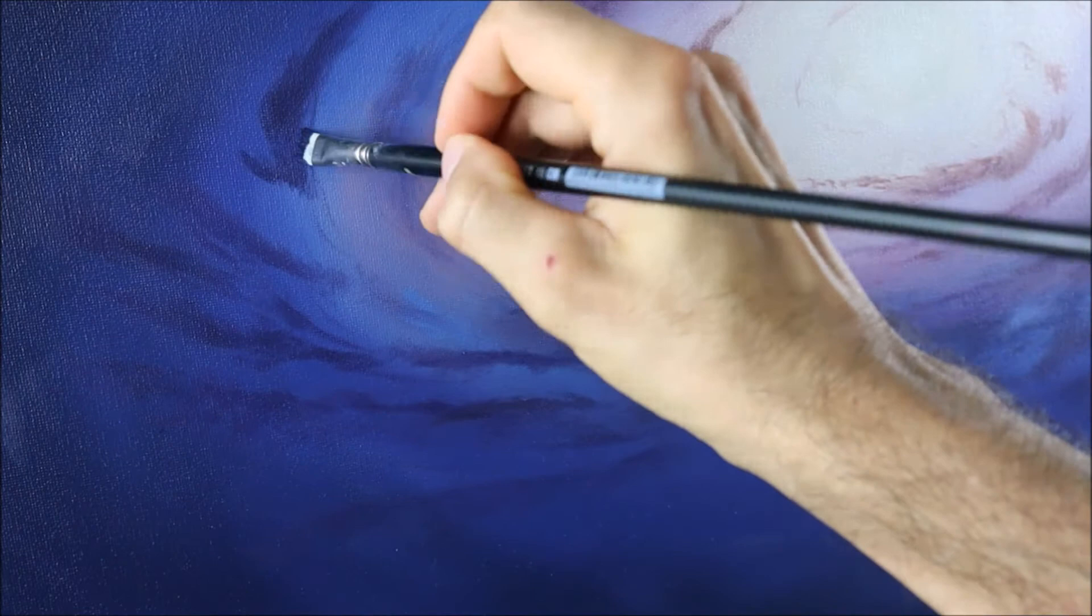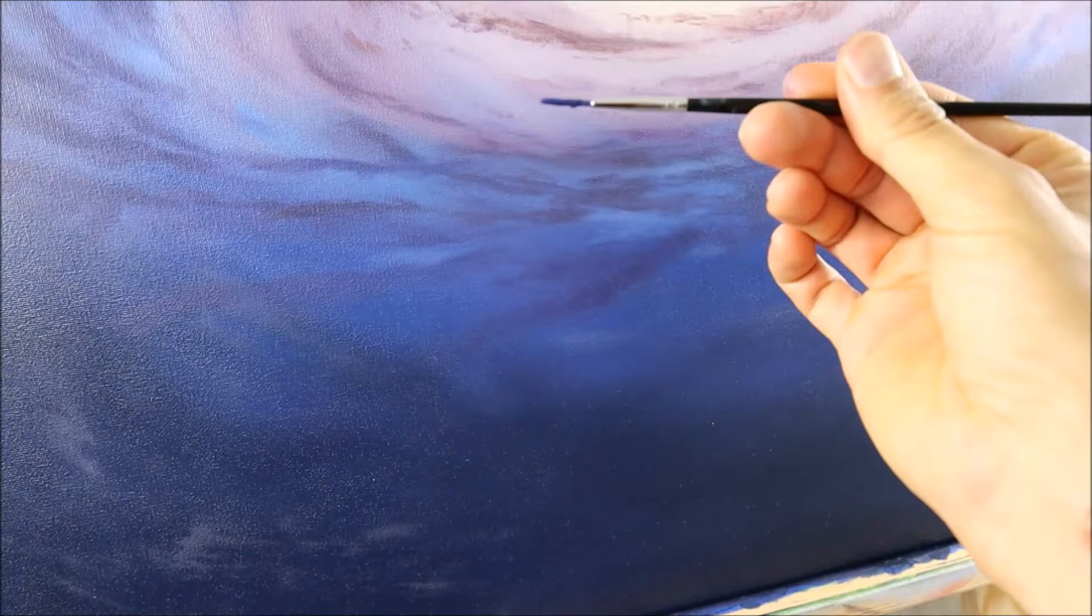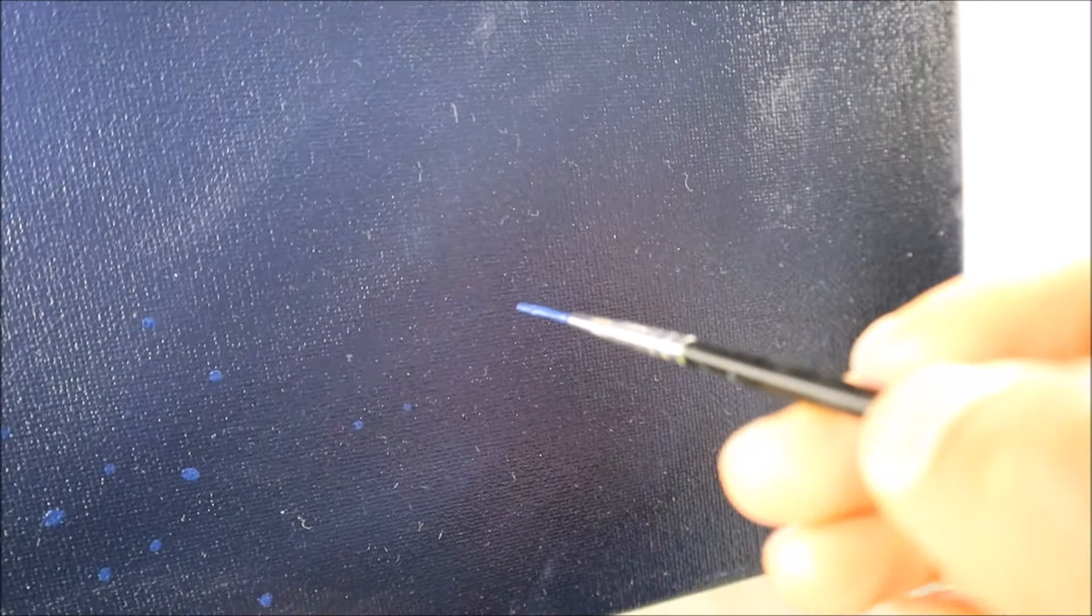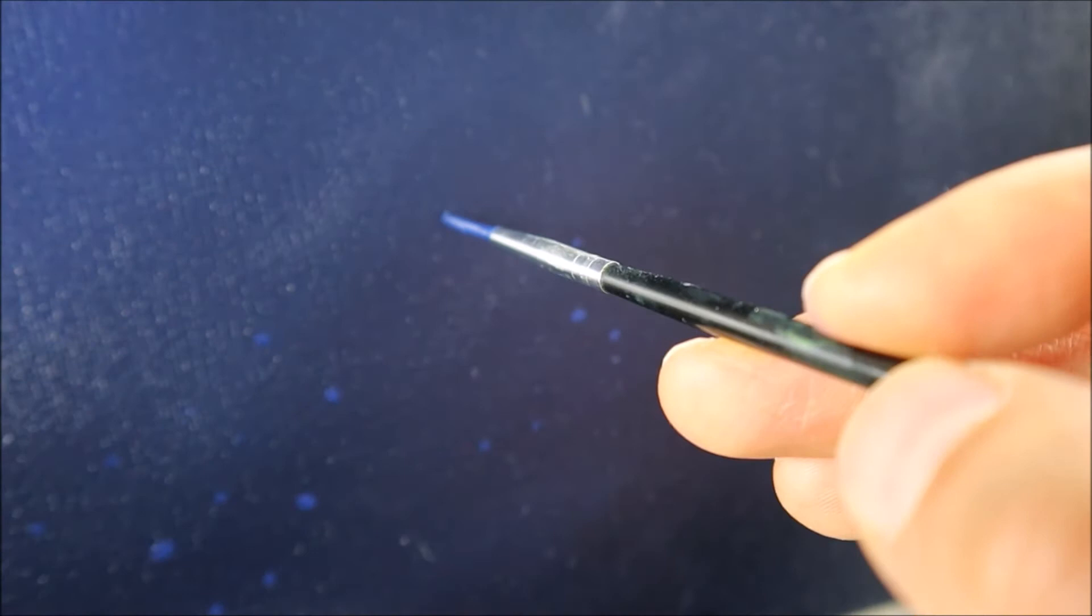Now, we start to put on the first layer of stars here. As you can see, it's pretty dark. Purplish blue here. Put it on random, and different sizes.